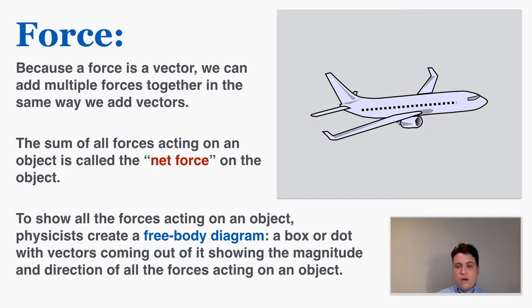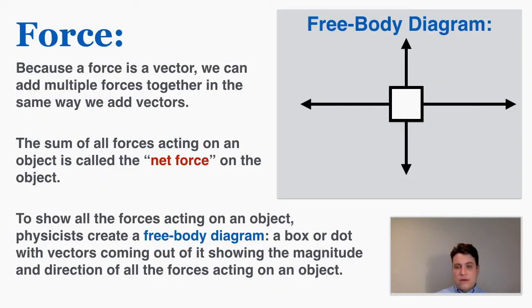We don't want to make drawings of all the objects that we have forces on. Instead, we represent those complex objects as simple squares or dots. This is an example of a free body diagram: a simple square with forces coming out showing the size, direction, and names of all the forces on an object.